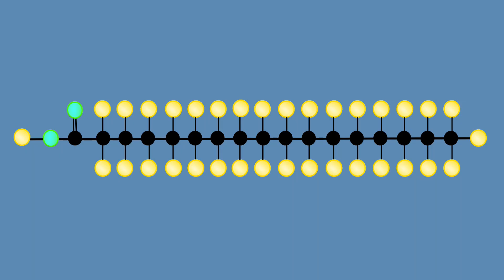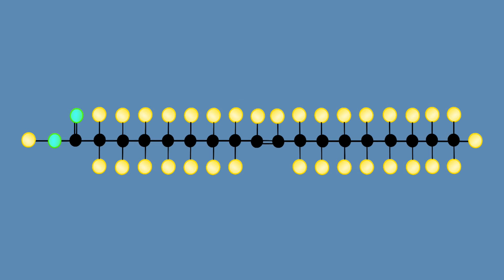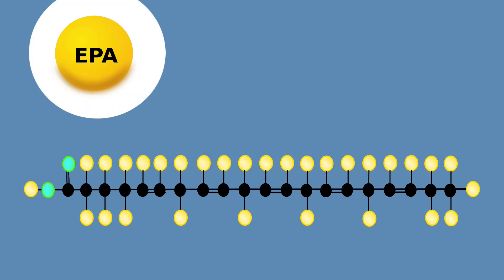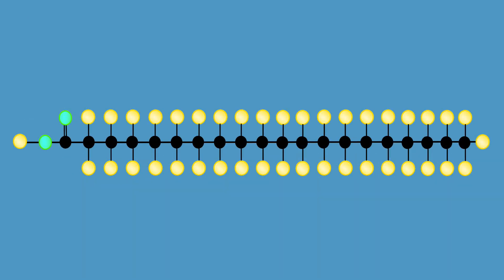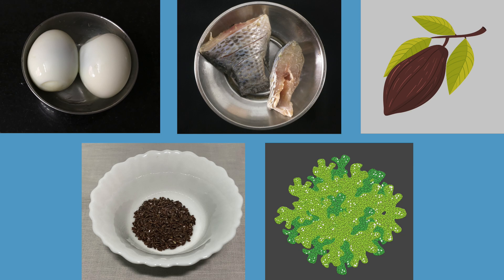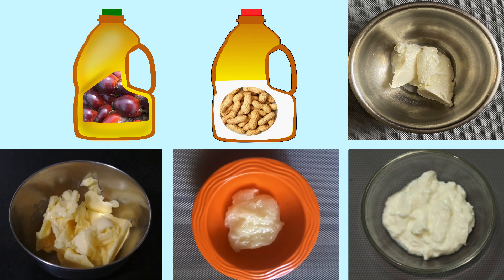Next, we will learn about long chain fatty acids. Oleic acid, palmitic acid and EPA are some examples. Linoleic acid, DHA and stearic acid are also long chain fatty acids. They are present in foods such as eggs, fish, cocoa, seeds and algae. Palm oil, peanut oil and dairy fat also have these fatty acids.